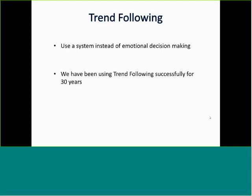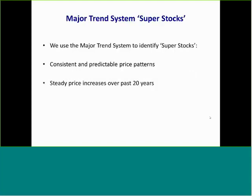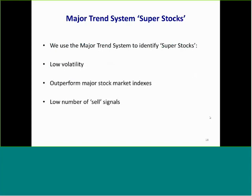When you use a trend following system, it allows you to make informed decisions — you simply follow the system without making emotional decisions. We've been using trend following successfully for 30 years. We use the major trend system to identify what we call super stocks. Super stocks have consistent and predictable price patterns, a steady price increase over the past 20 years, low volatility, outperformance of the major stock market indexes, and a low number of sell signals.